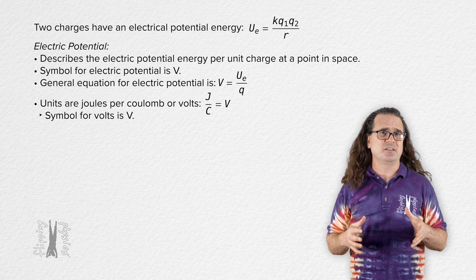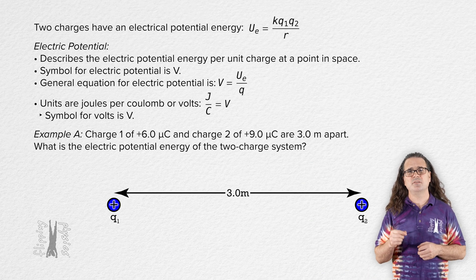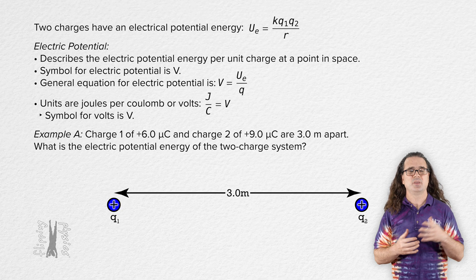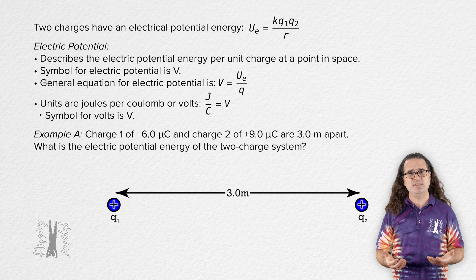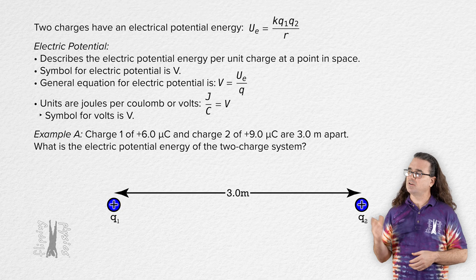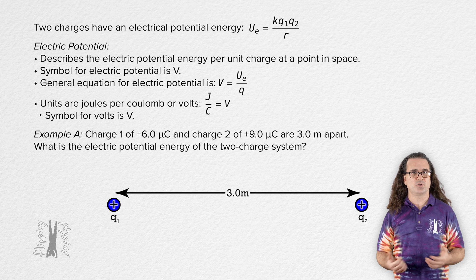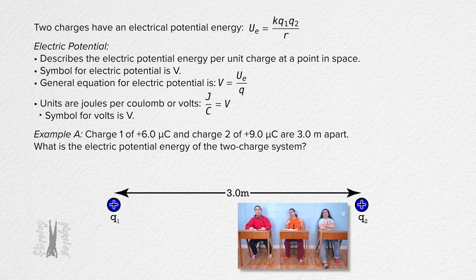To help us understand electric potential, let's start with a simple electric potential energy example. Billy, please read the question, and Bo, please solve the question. Example A: Charge 1 of positive 6.0 microcoulombs and charge 2 of positive 9.0 microcoulombs are 3.0 meters apart. What is the electric potential energy of the two-charge system?